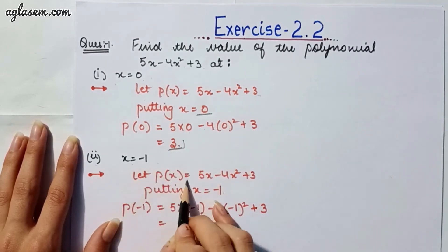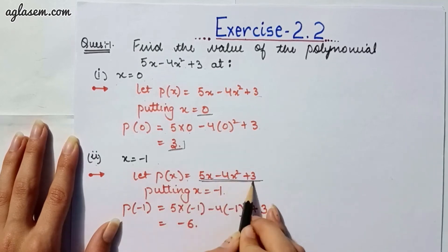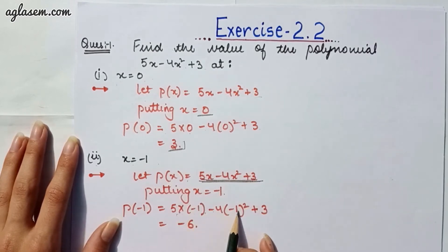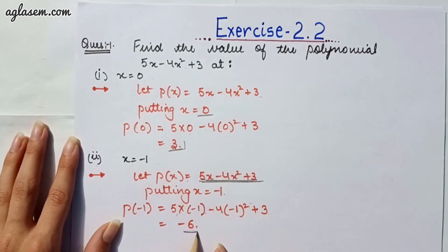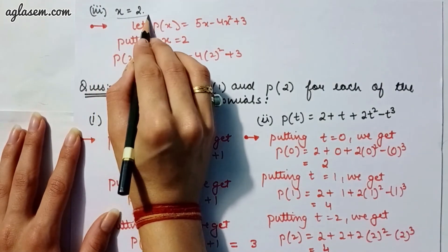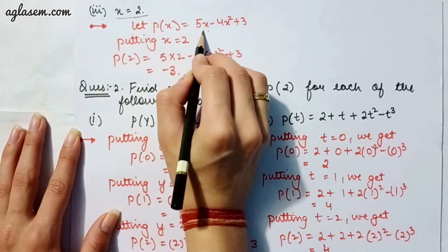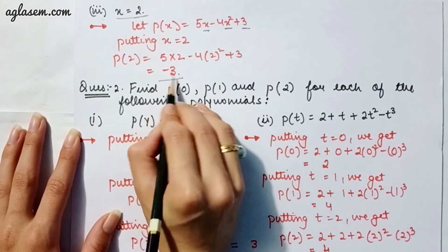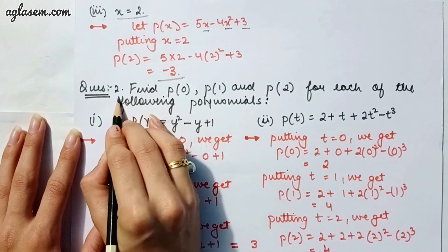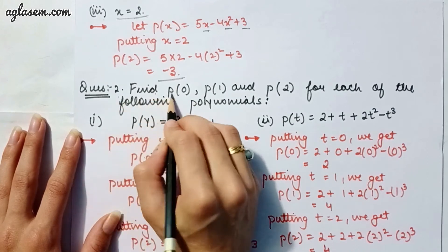Moving to the second part, x = -1: by putting -1 we get 5×(-1) minus 4×(-1)² plus 3, which gives minus 6. Moving to the third part, x = 2: by putting 2 and solving, we get minus 3.